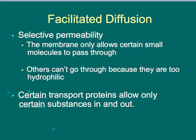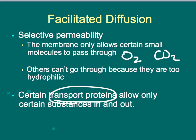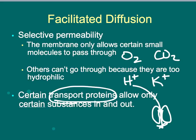Facilitated diffusion is a lot like osmosis — it's diffusion, so everything moves without energy and moves with the concentration gradient from high to low. But it requires a doorway to move through, just like people can get into a room but can't go through the walls. The transport proteins are the doorways that facilitate movement. The membrane only allows certain small things through, like oxygen or carbon dioxide, while others like hydrogen ions or potassium ions can't pass because they're too hydrophilic or too large. Each transport protein only allows certain substances through — one protein for hydrogen, a different shaped one for potassium.